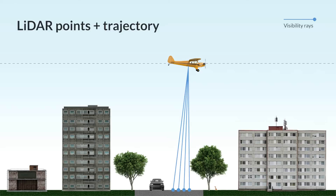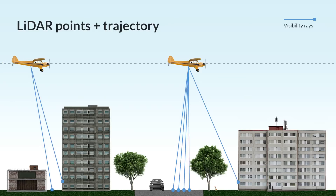Let's use some examples to understand this. The first example: consider a point located on a building facade with a tree growing nearby. The visibility ray for this point tells us that the line between the building and the aircraft must have no objects on it — in other words, the tree shouldn't obscure the facade for the view from the aircraft at the position we consider. Second example: points in a narrow passage between buildings in the left part of the scene. Using the same reasoning, visibility rays for these points ensure that the space between the buildings is empty.